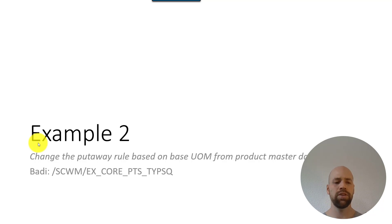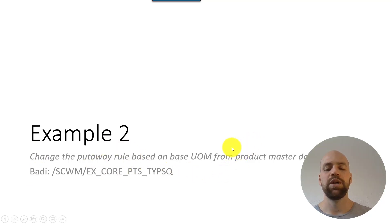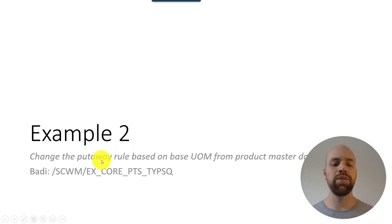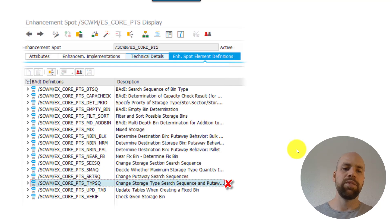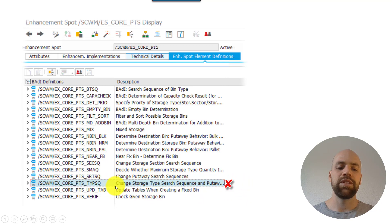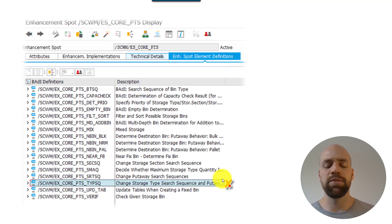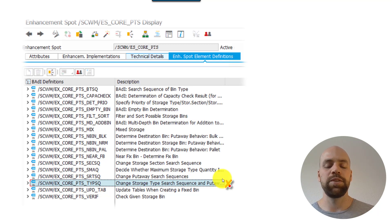Example two: we want to change the put away rule — this time based on product master data rather than warehouse task data. For instance, if the base unit of measure is 'bottle,' apply put away rule 'addition to stock'; if it's 'case,' apply 'empty bin.' Looking at our enhancement spot SEWM_ES_CORE_PTS, we find a BAdI just from its description: 'Change Storage Type Search Sequence and Put Away Rule,' which corresponds to the put away rule set in the storage type search sequence in customizing.